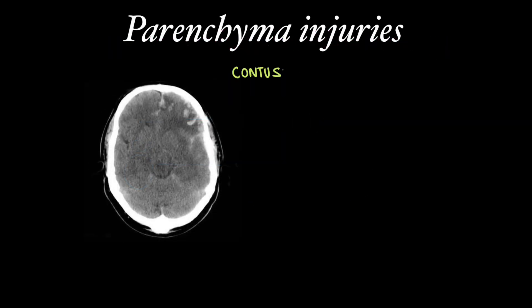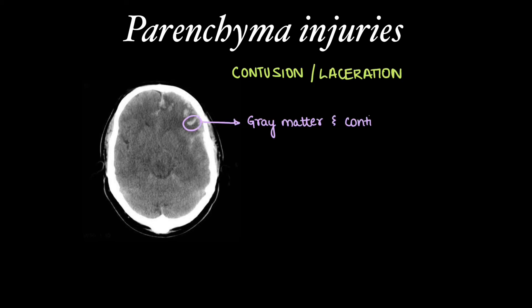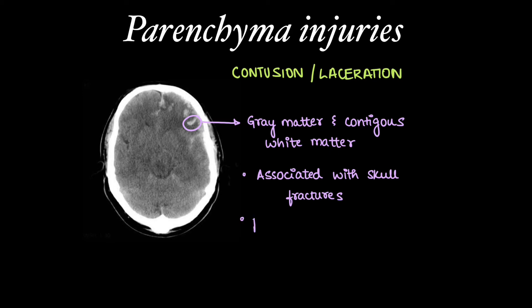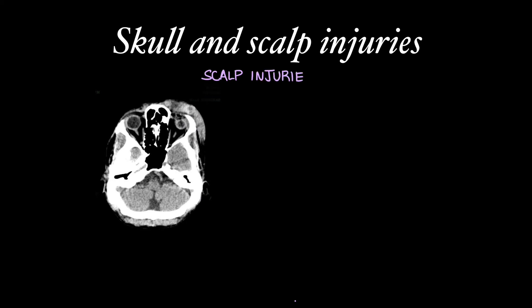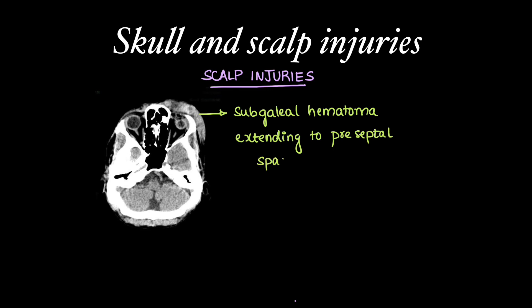Brain parenchymal injuries can be contusions or lacerations. They commonly involve grey matter and contiguous white matter along the site of injury. They are almost always associated with skull fractures and show perilesional edema. Associated skull and scalp injuries can be present; in this case we can see a subgaleal hematoma extending to the preseptal space of the orbit.